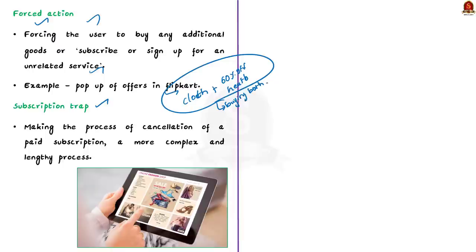And finally, there is the subscription trap. It is a type of dark pattern that makes the process of cancellation of a paid subscription a more complex and lengthy process. So it is a kind of trap that ends up in continuing subscription even if you are not interested. These are some of the common dark patterns.